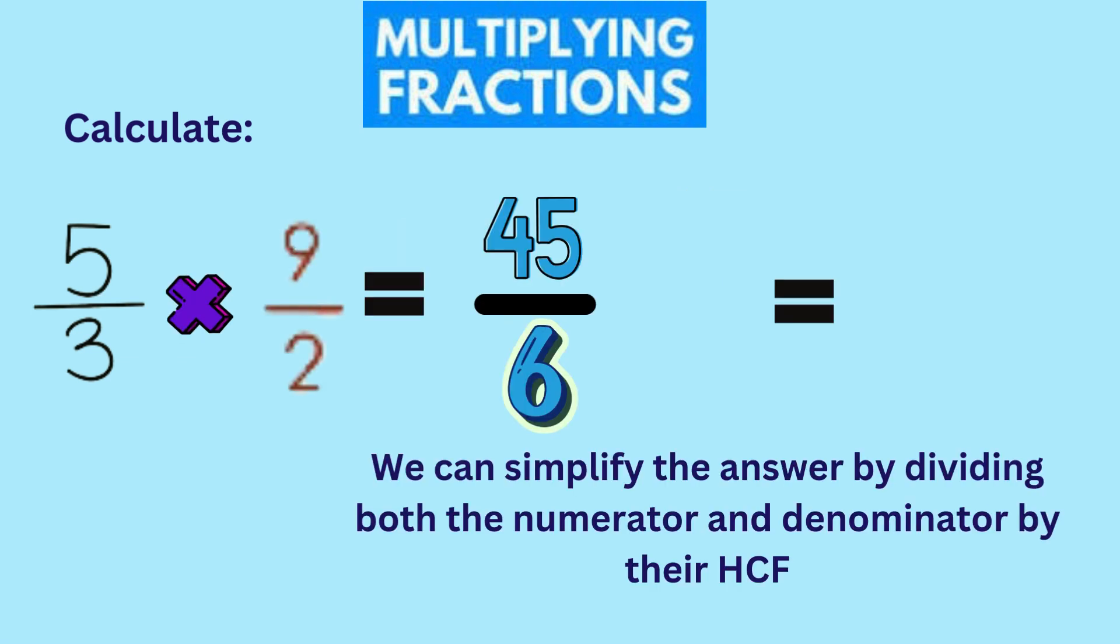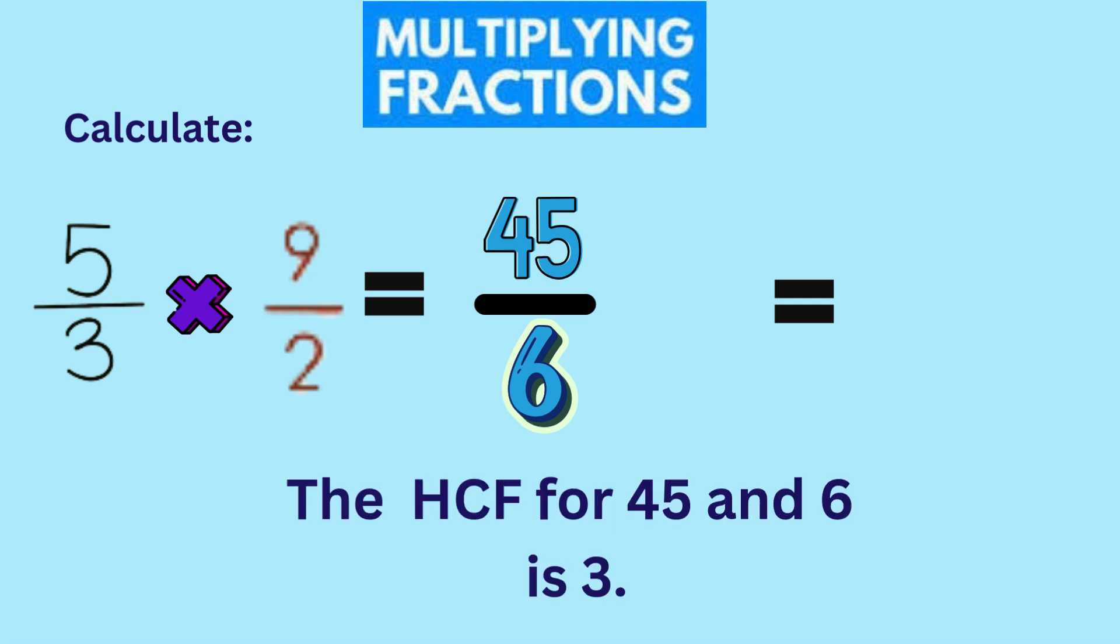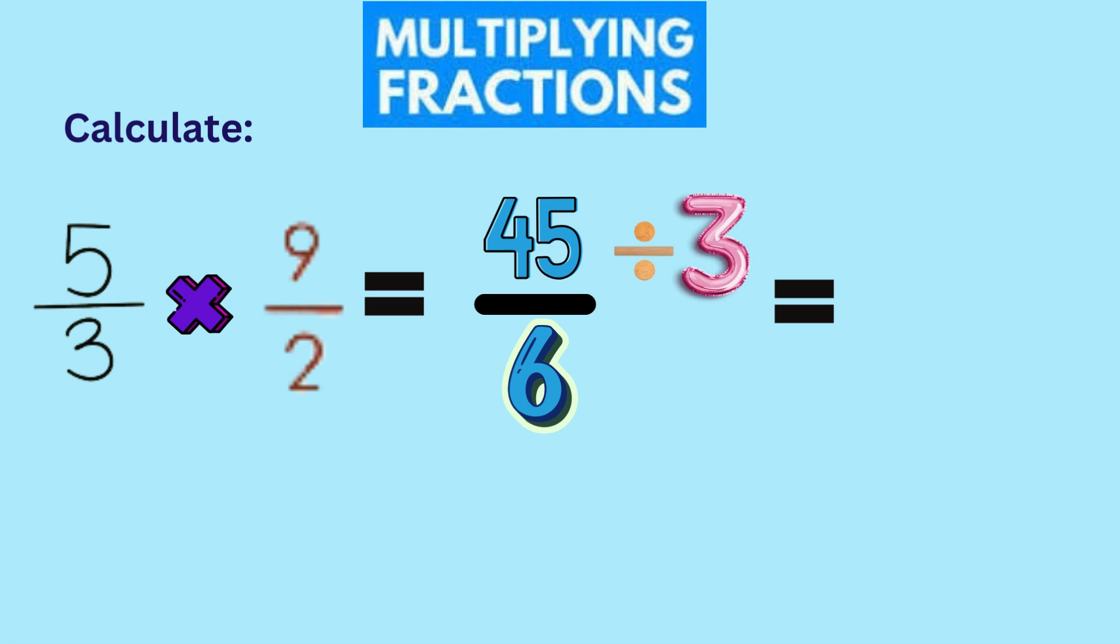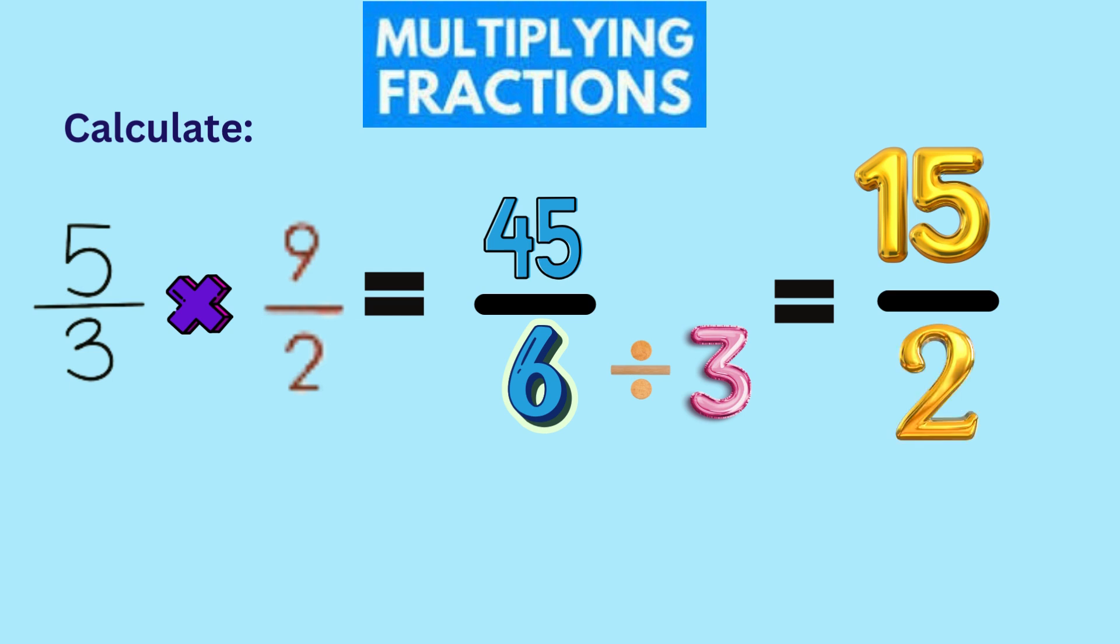We can simplify the fractions by dividing both the numerator and denominator by the highest common factor. In this case, three is the HCF, since it is the largest number that can divide both values. Forty-five divide by three is fifteen, while six divide by three is two. So, our simplified solution is fifteen-halves, or seven-and-a-half.